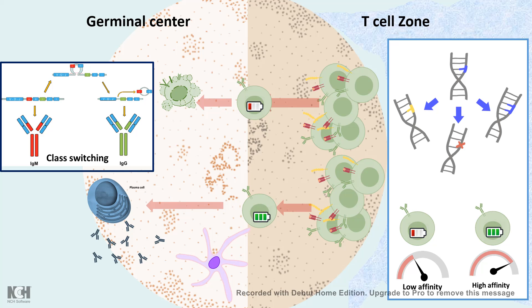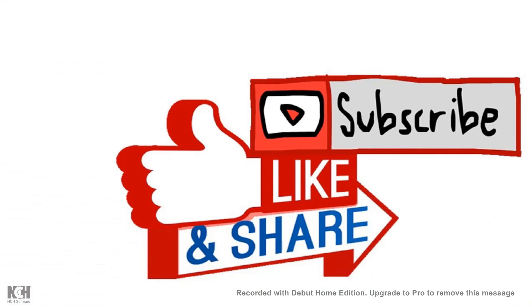In this video we learned about the process of B-cell activation, which can happen in a T-cell dependent or independent way, where it happens, what the consequences are, and what processes follow activation. I hope you enjoyed this video. If you liked it, give it a thumbs up and don't forget to like, share, and subscribe, so I can reach a bigger audience.